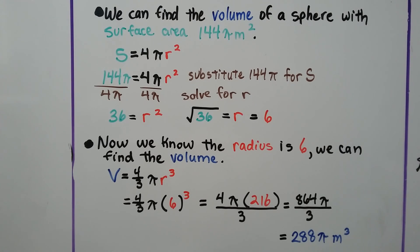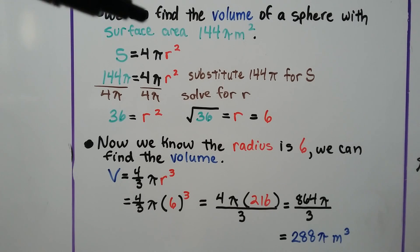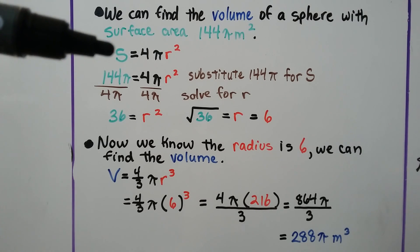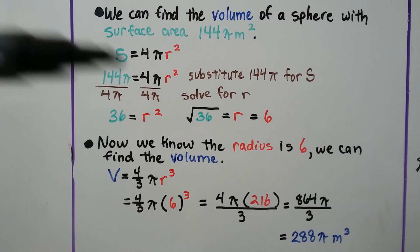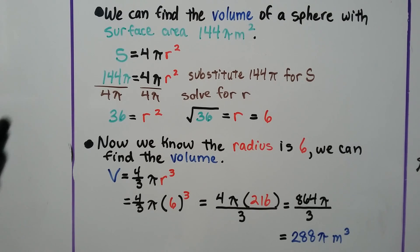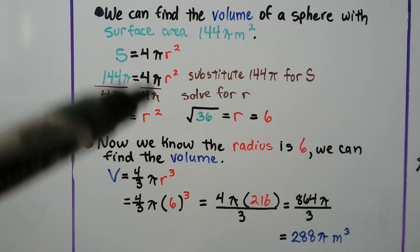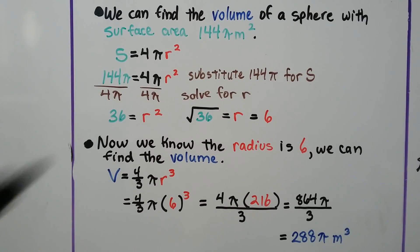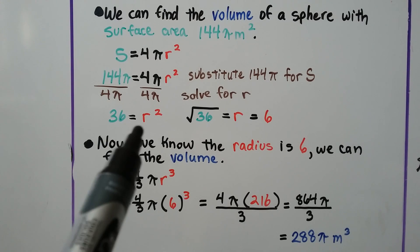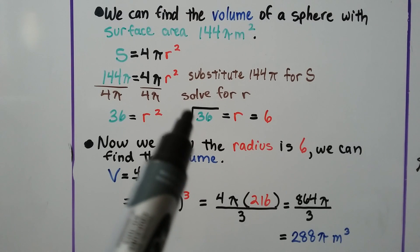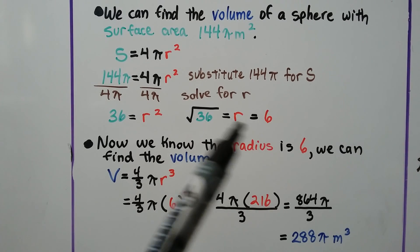We can find the volume of a sphere with surface area 144 pi meters squared. Substituting 144 pi for S gives us 144 pi equals 4 pi r squared. Dividing both sides by 4 pi, the pi's cancel and 4 goes into 144 thirty-six times, leaving us with r squared equals 36. Taking the square root of both sides gives us a radius of 6.